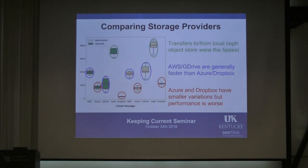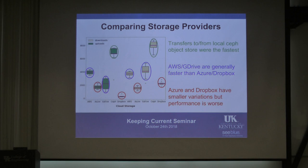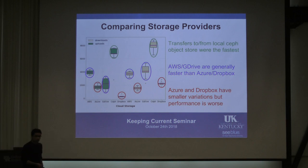After that, we decided to compare the actual destinations — how well or poorly they perform for transfers, both uploads and downloads. Unsurprisingly, our local object store was fast because we have direct access to it locally and don't have to go out. The cost, of course, is the maintenance and how much space we allocate. When comparing cloud providers, AWS and Google Drive provided better performance than Azure and Dropbox, but the variation was smaller in Azure and Dropbox.